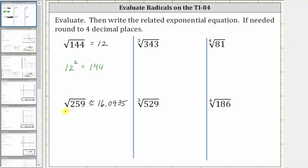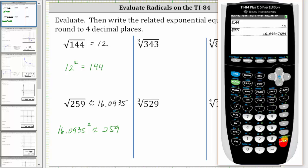The reason the square root of 259 is approximately 16.0935 is because if we square 16.0935, we will get approximately 259. Let's verify this on the calculator. It won't be exact because we did round, but 16.0935 squared is approximately 259.